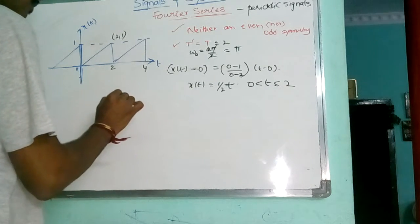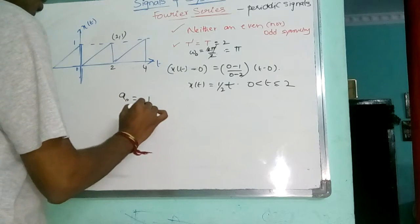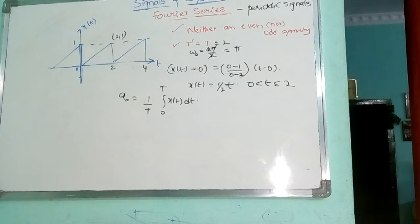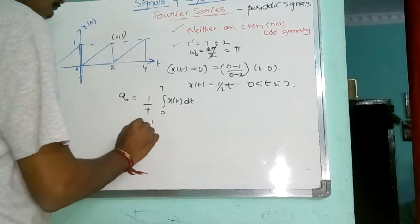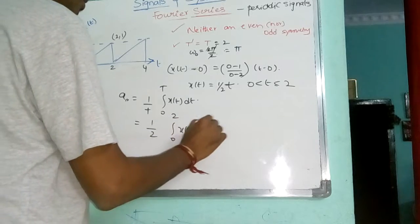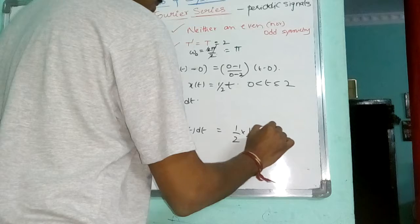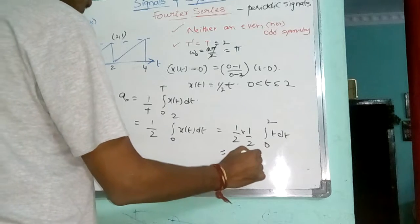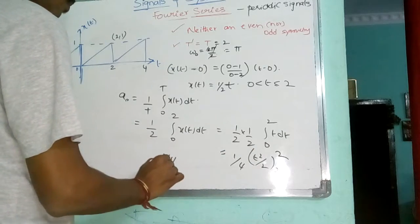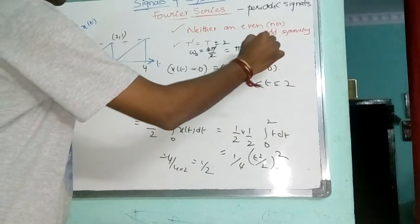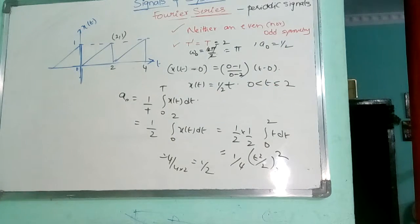Now, first thing I need to do is for the DC term. A naught is given by 1 by T, integral 0 to T, x of T, DT. This is 1 by 2, integral 0 to 2, x of T DT. That is 1 by 2 into 1 by 2, integral t dt from 0 to 2. That gives 4 by 4 into 2, which is half. So, A naught value is half.